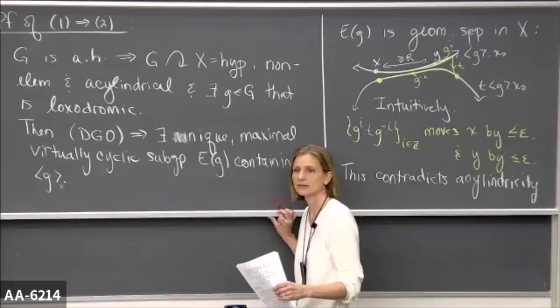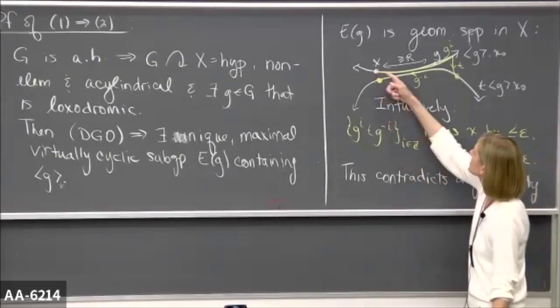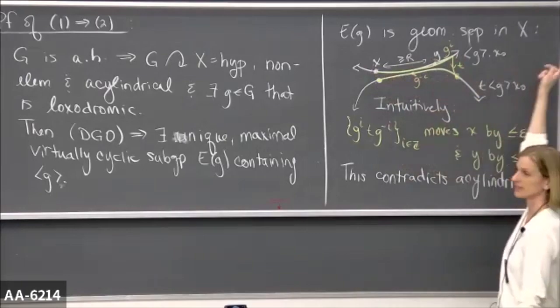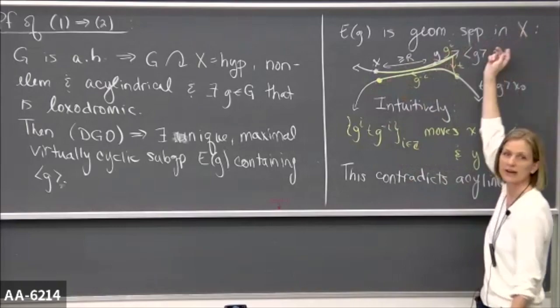Question: do you use that the translation length of G is uniformly bounded below to get a uniform R? It will not be important to this argument because I'm not saying that G translates X past Y or anything — just that G translates it to the right by some amount and these axes are infinite. It doesn't matter how far it translates. So that's actually not one of the details I skipped.